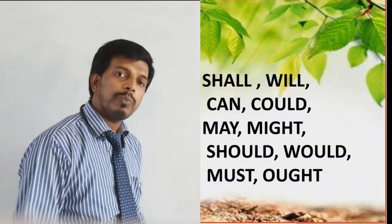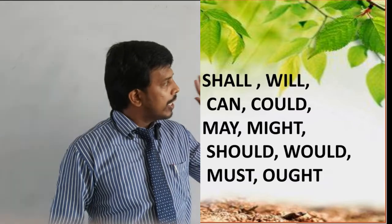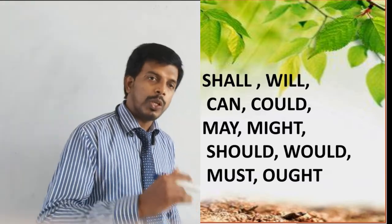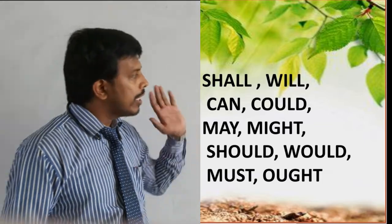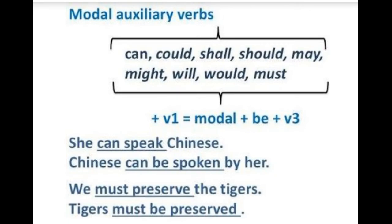Now let us see the case of modal verbs. Active verbs that follow modal verbs such as shall, will, can, could, may, might, should, would, must, etc. follow this structure: object of the active voice + modal verb + be + third form of the verb + by + subject. For example, 'She can speak Chinese' becomes 'Chinese can be spoken by her.' And 'We must preserve the tiger' becomes 'Tigers must be preserved.'